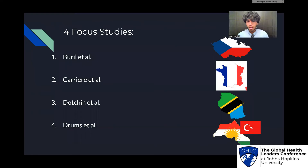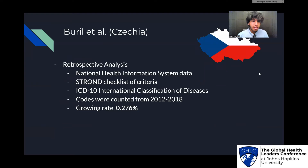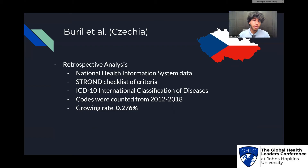I'd like to focus on four studies. First is Birol et al. in Turkey, second Carrera et al. in France, third Darshan et al. in Tanzania, and fourth Dramz et al. in Turkish-Kurdistan. Birol et al. in Turkey was a retrospective analysis — they went through National Health Information System data, a previously taken database for the whole nation. They used a strong checklist for criteria: diagnosis code ICD-10 for Parkinson's disease. Codes were counted from 2012 to 2018. They found a growing rate of 0.276%, which is not large but not very small, and can be expected of a developed nation. This seems to be a solid study design for a developed country.